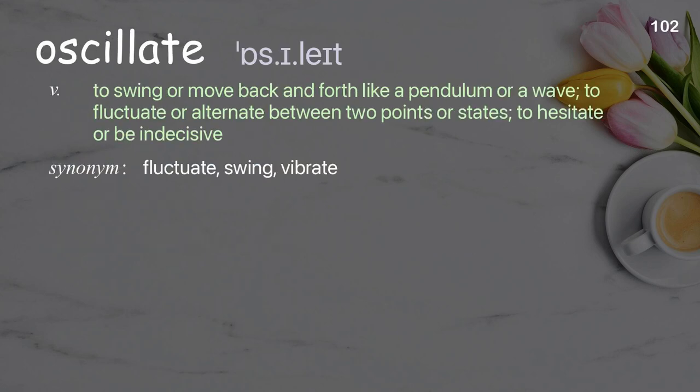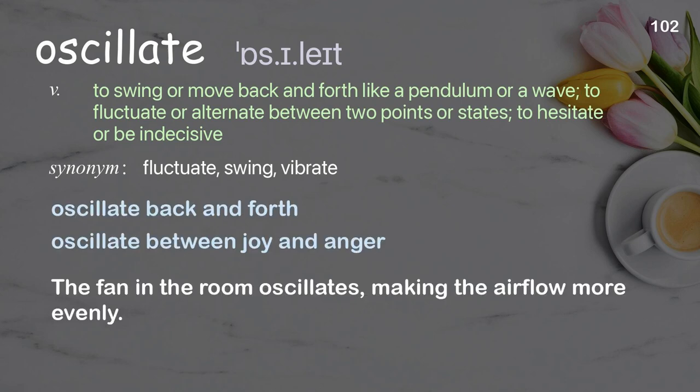Oscillate: to swing or move back and forth like a pendulum or a wave; to fluctuate or alternate between two points or states; to hesitate or be indecisive. Examples: oscillate back and forth; oscillate between joy and anger. The fan in the room oscillates, making the airflow more even.